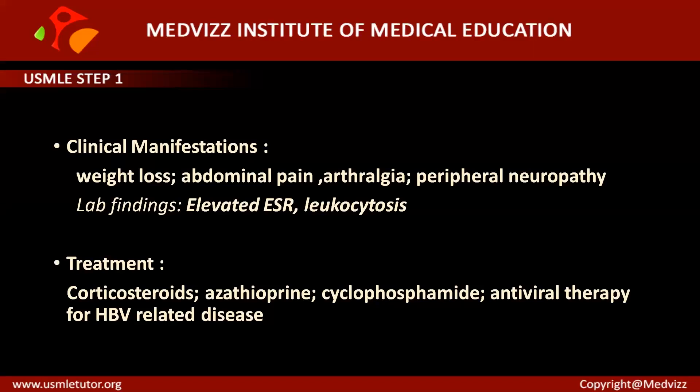p-ANCA is typically important in Churg-Strauss syndrome, and the condition is also associated with eosinophilia. Churg-Strauss syndrome is treated with high-dose corticosteroids. Since Churg-Strauss is similar to polyarteritis nodosa in being a necrotizing vasculitis, we have covered both conditions together.